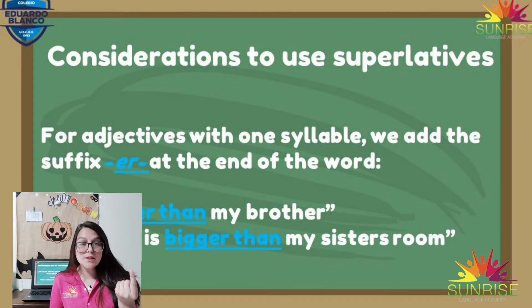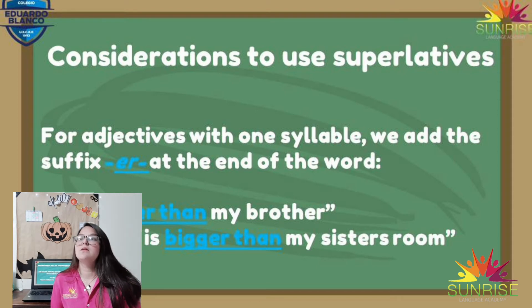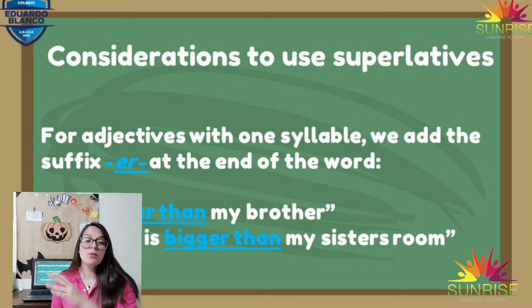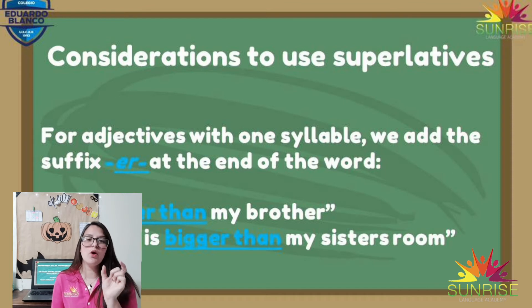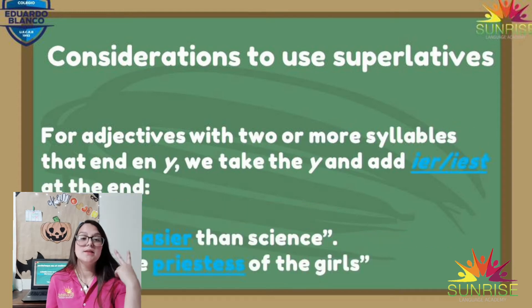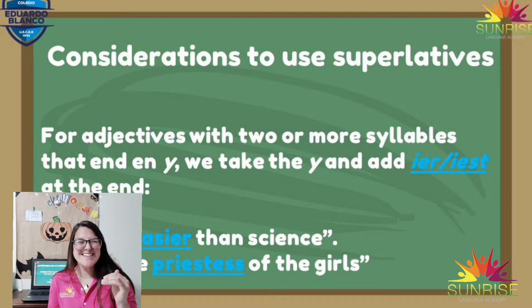To use comparatives, there are some rules. If the word has one syllable, we add -er at the end — 'my room is cleaner,' 'I'm smaller.' And remember that after the adjective we have to put 'than' — 'my room is cleaner than my brother's.' 'Than' is what marks that a comparison is being made between two things. If it has more than two syllables, we add -ier or -iest at the end.